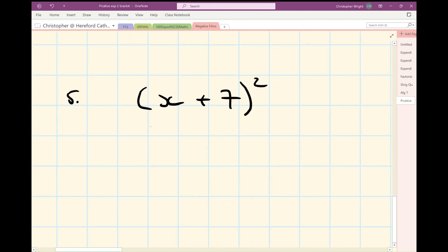Number five, I hope you have written this down as x plus seven times x plus seven, or at the very least thought of it in that way, gives you x squared plus 14x, because you get seven x and seven x, plus 49.